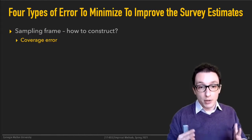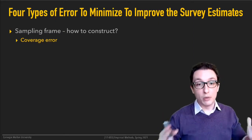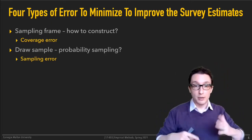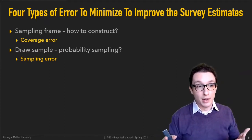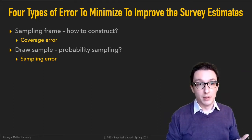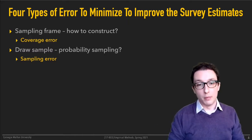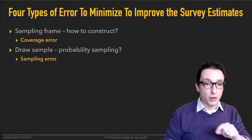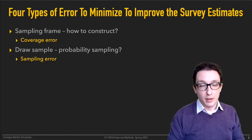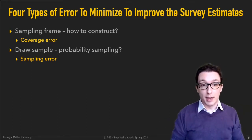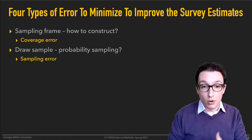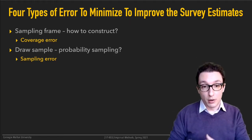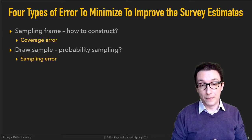Then there's sampling error — how many people from the sampling frame you're actually surveying. Political pollsters are not surveying every individual with the right to vote in the United States; they survey a sample. How large, small, or representative the sample is obviously impacts the error between what you're measuring on the sample and what might hold true for the entire population.